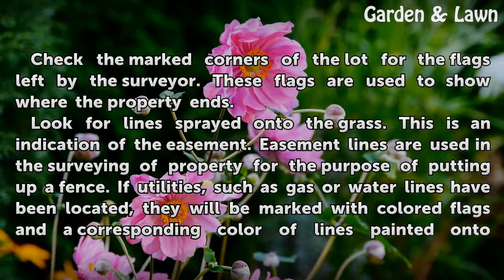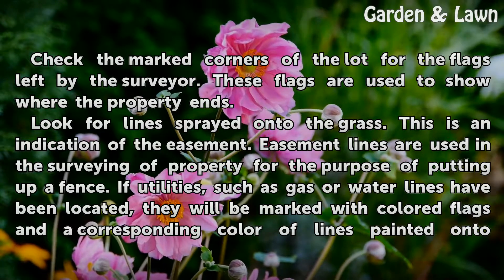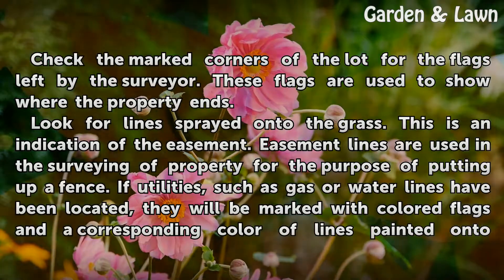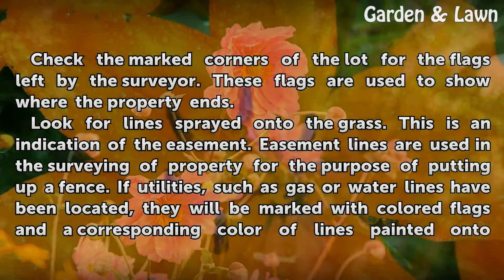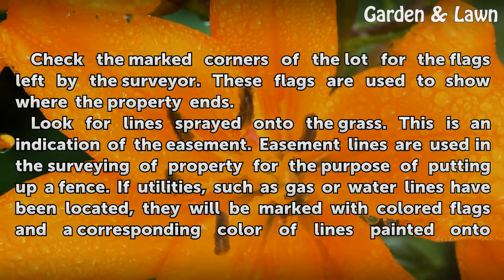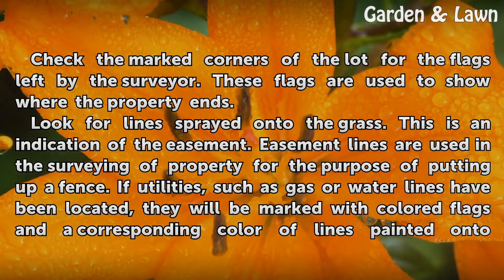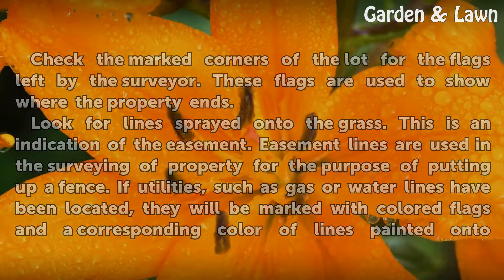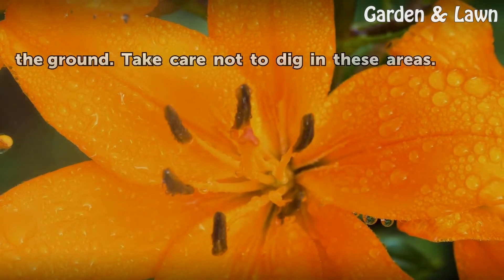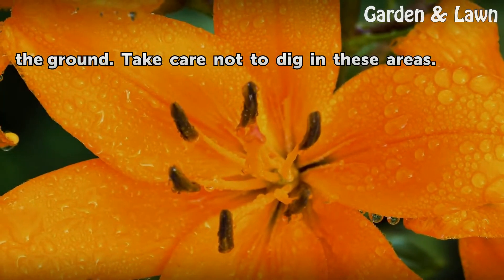Look for lines sprayed onto the grass — this is an indication of the easement. Easement lines are used in the surveying of property for the purpose of putting up a fence. If utilities such as gas or water lines have been located, they will be marked with colored flags and a corresponding color of lines painted onto the ground. Take care not to dig in these areas.